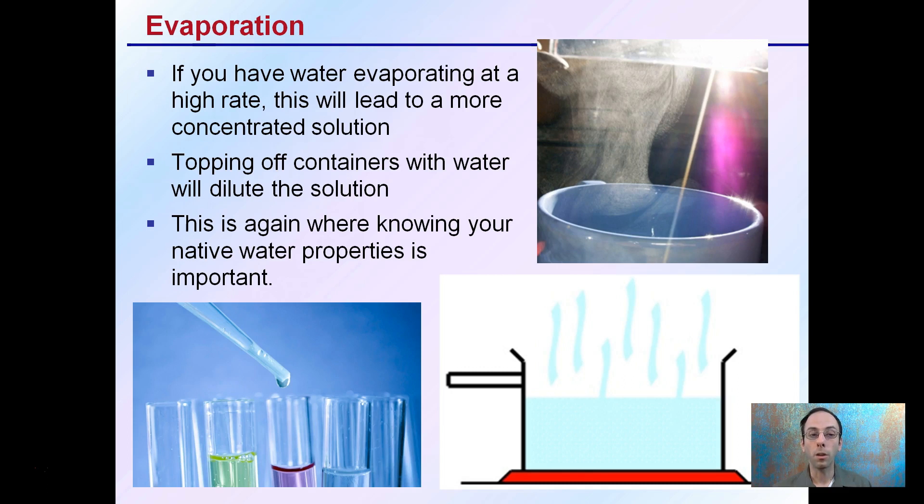This is where a water miner comes into place. Also, good growers are knowledgeable about their native water properties, which is important. Instead of just topping off with water, some water may require a pretreatment, either a pH adjustment or maybe adding RO water if your given conditions have too high concentration of other unwanted calcium, magnesium, and other hard water properties.